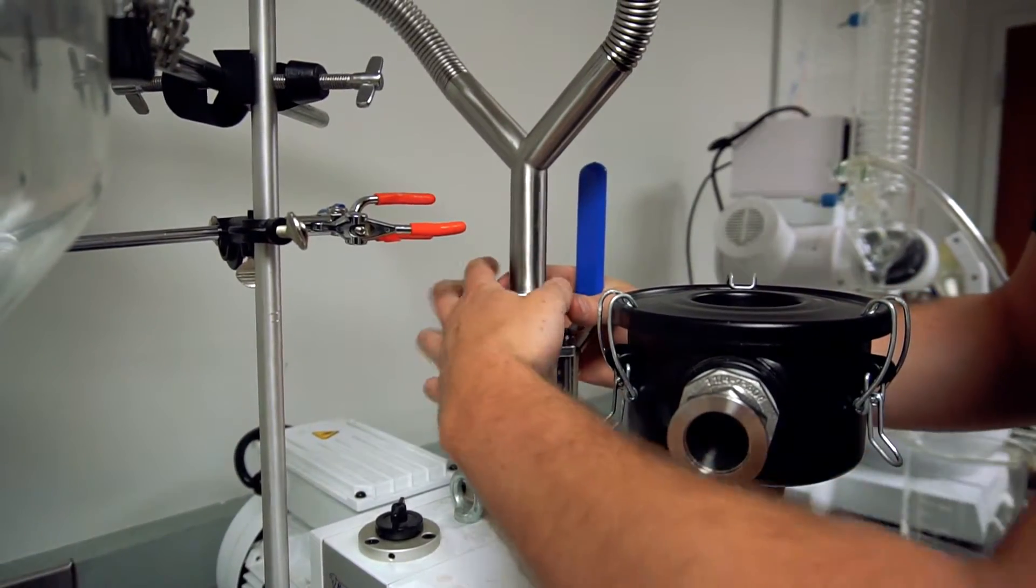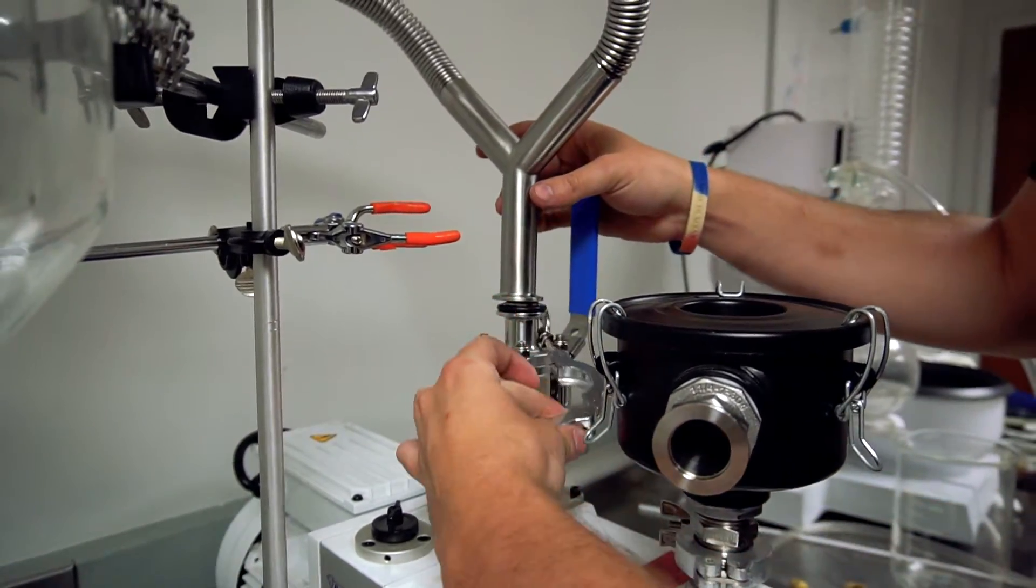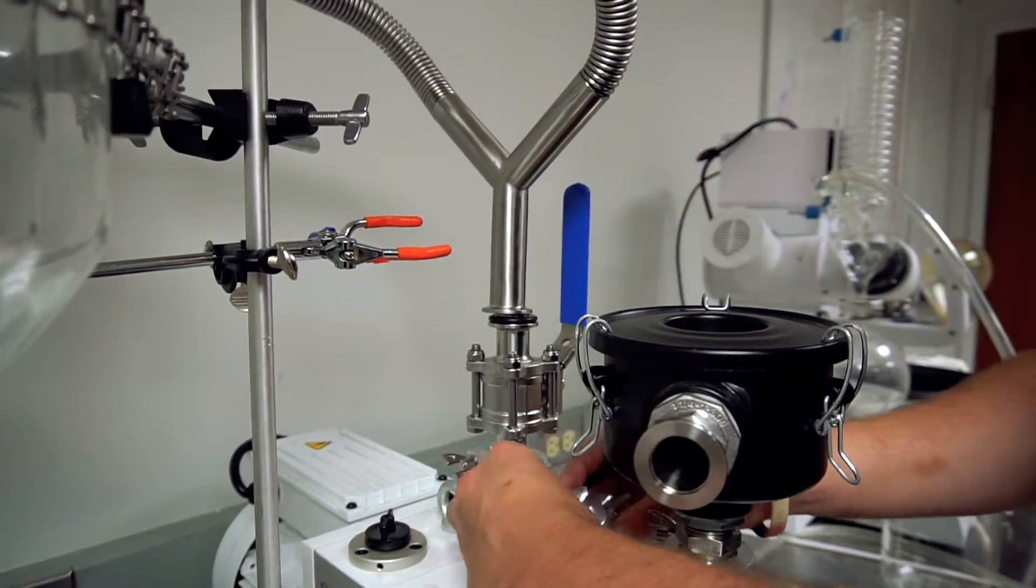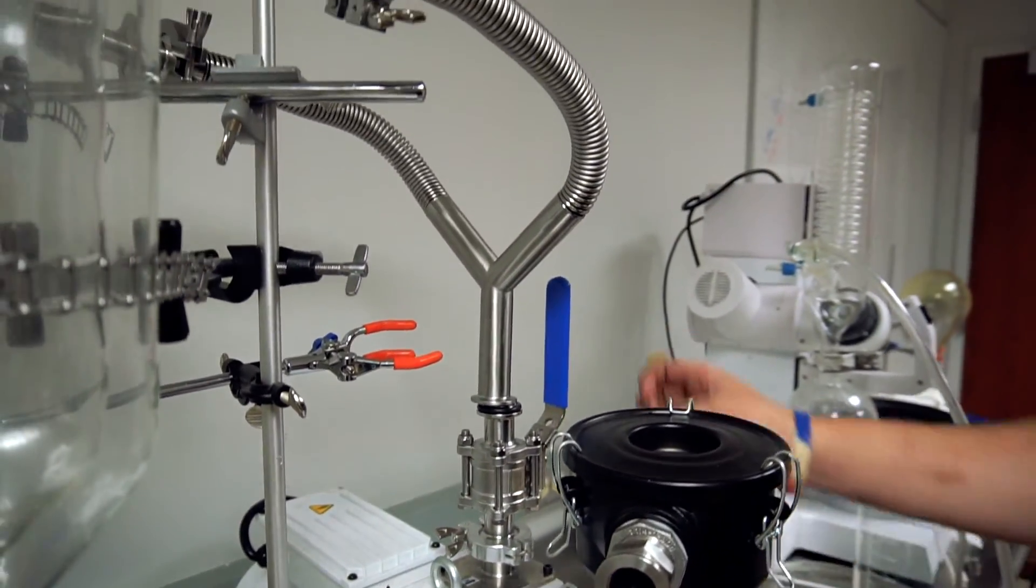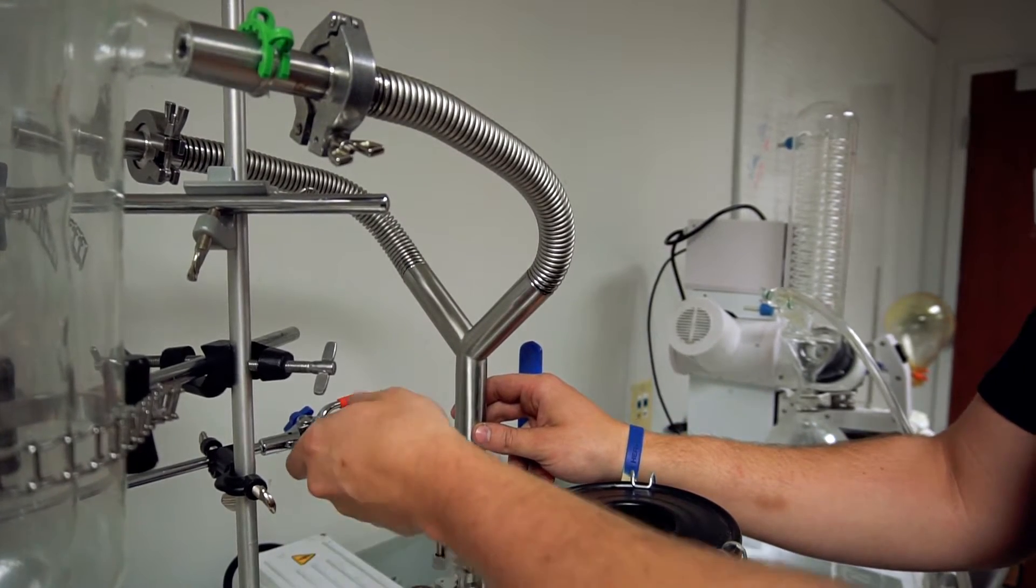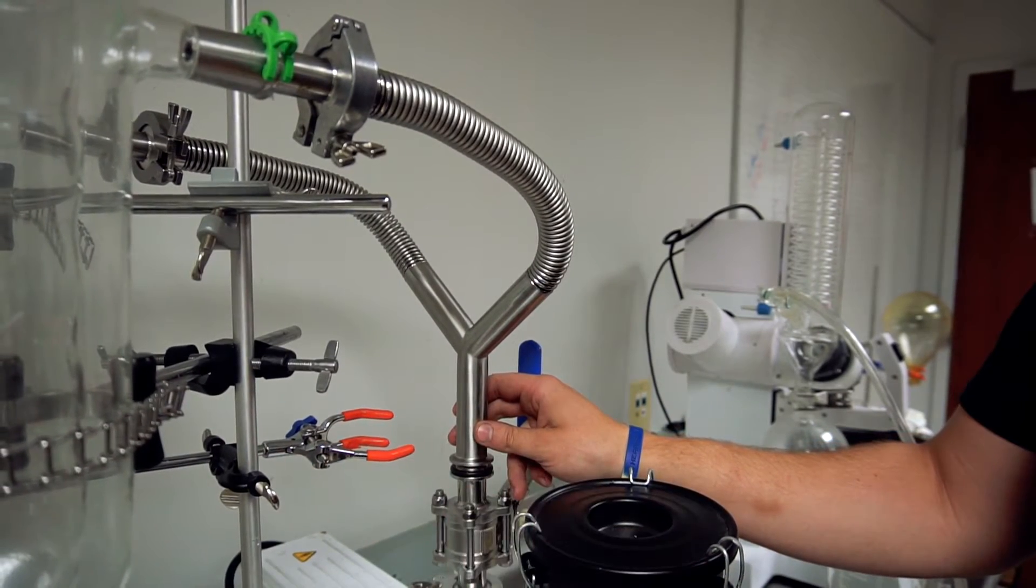But after I take these clamps off, you can see that the Y bellows kind of stays in place, showing that it's not putting a lot of strain on the glass. It's mostly just held in place for extra safety in case it gets bumped or something like that.